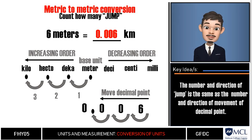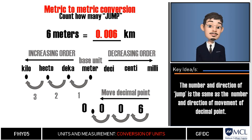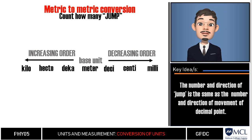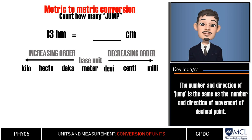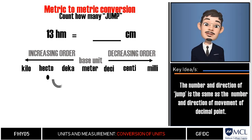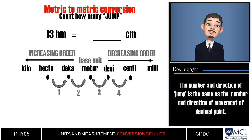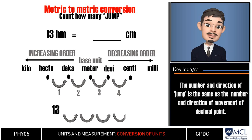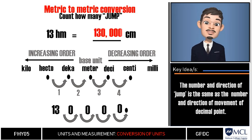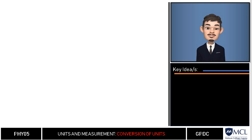Moving three decimal places to the left gives us 0.006 kilometer, which is equivalent to six meters. This technique is very helpful when calculators are not allowed. For another example: convert 13 hectometers to centimeters. We jump from hecto to centi — one, two, three, four jumps to the right — and move the decimal point four places to the right, giving us 130,000 centimeters.